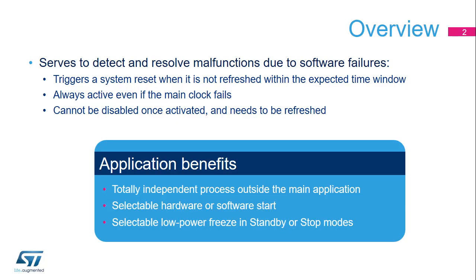The Independent Watchdog is used to detect and resolve malfunctions due to software failures. It triggers a reset sequence when it is not refreshed within the expected time window. Since its clock is an independent 32 kHz Low-Speed Internal RC Oscillator, or LSI, it remains active even if the main clock fails. Once enabled, it forces the activation of the Low-Speed Internal Oscillator, and it can only be disabled by a reset.